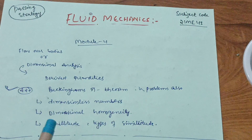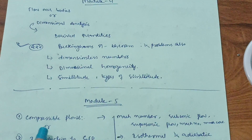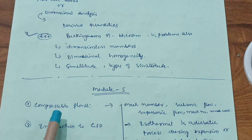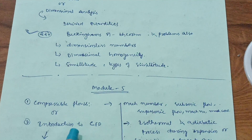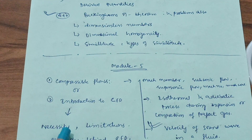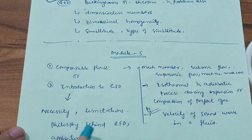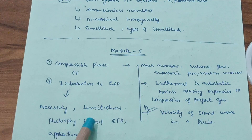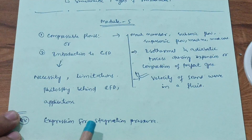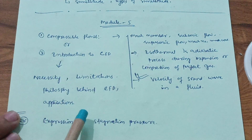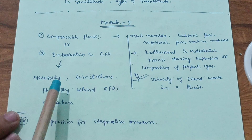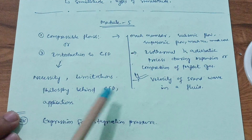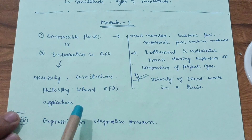Module 5 also contains two chapters: compressible flows and introduction to CFD. According to me, the syllabus is less in the CFD part. CFD covers necessity of CFD, limitations of CFD, philosophy behind CFD, and its applications — just four concepts. One question will mix topics: expression for stagnation pressure (from compressible flow) combined with necessities of CFD.